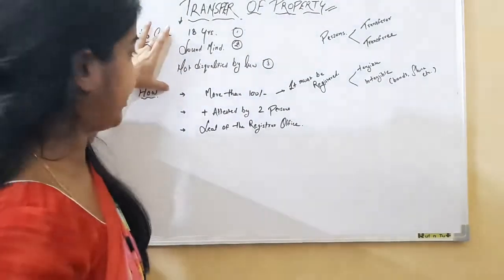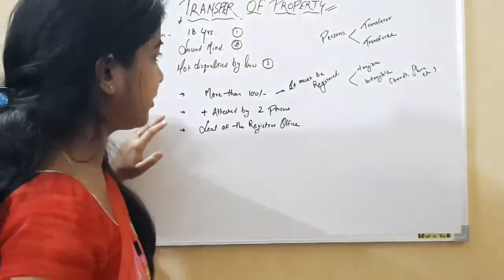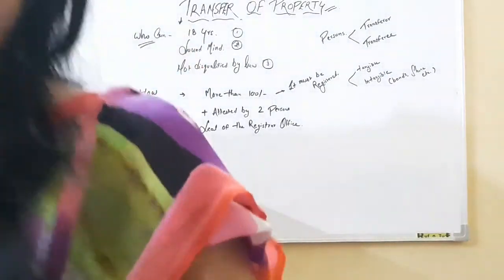This is the topic of how the property can be transferred to two persons. The person's qualifications, that property must be registered. In the next class, the next topic. Thank you.